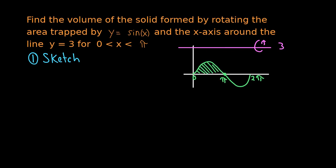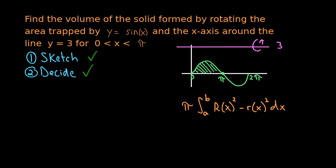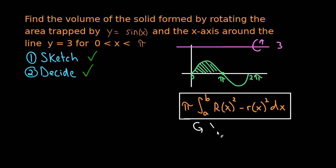That gap is one clue that we might want to use the washer method. We've decided to use the washer method. It's a great idea to write down the formula: pi times the integral of the outer radius squared minus the inner radius squared. This is the washer method formula any time we're rotating around the x-axis or anything parallel to the x-axis. In our problem, we have the horizontal line y equals 3, so this is the right method.